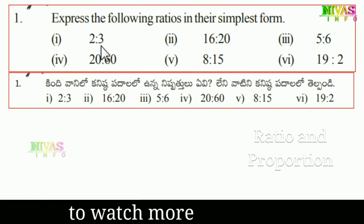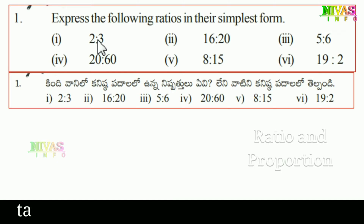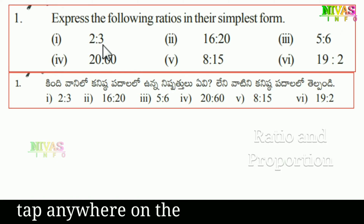For the first ratio, we divide 2 into 3. The simplest form remains the same, so the ratio stays as 2 is to 3.